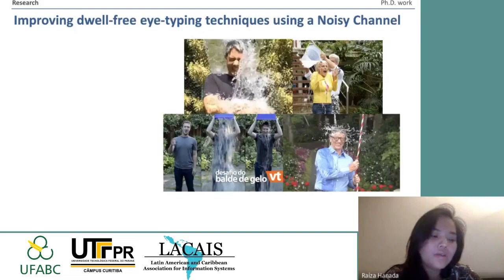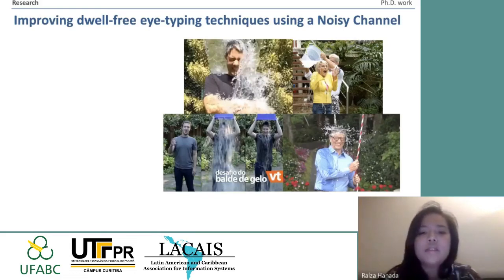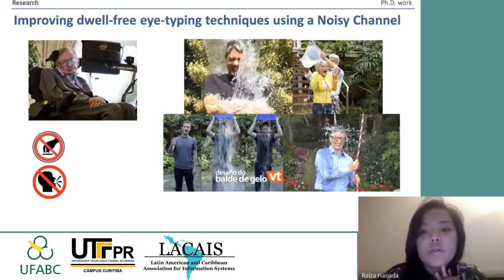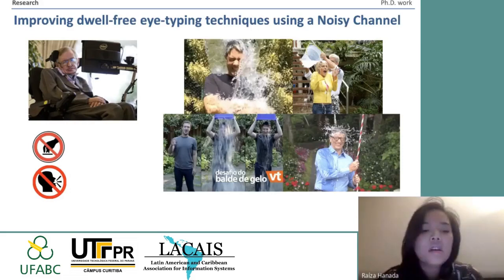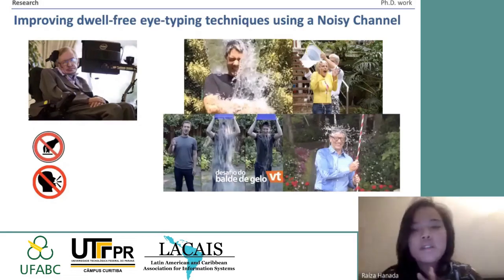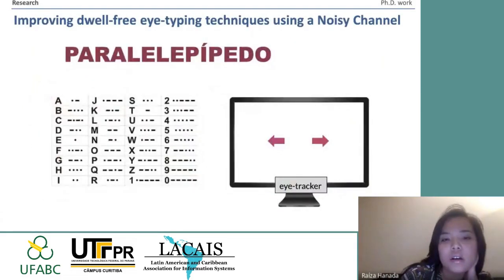Some years ago there was the Ice Bucket Challenge, where famous people poured ice water on their heads to raise money for ALS — a disease whose most famous patient is Stephen Hawking. ALS is a disease where a person cannot use their body below the neck: they can't type, and depending on the degree of the disease, they can't even talk. The only thing a person with ALS can do is use their eyes, which led us to work on gaze interaction for accessibility.